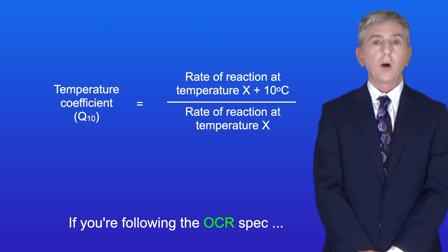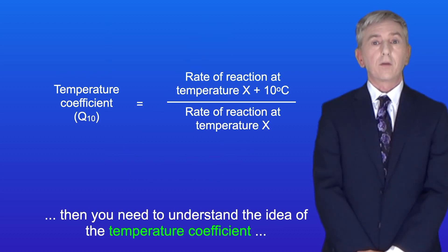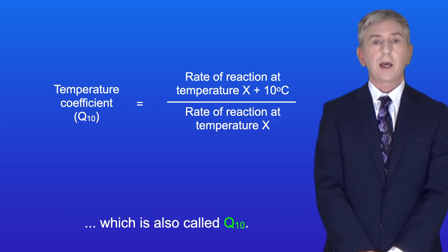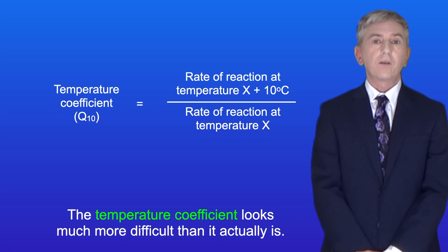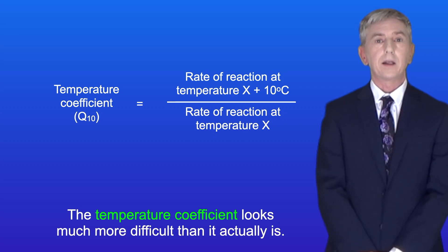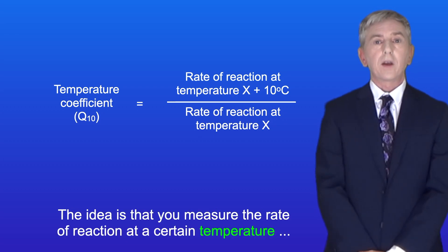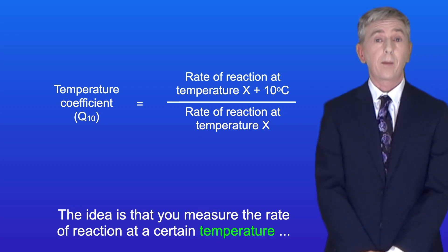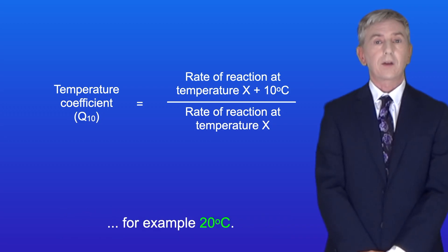If you're following the OCR spec, then you need to understand the idea of the temperature coefficient, which is also called Q10. The temperature coefficient looks much more difficult than it actually is. The idea is that you measure the rate of reaction at a certain temperature, for example 20 degrees Celsius.